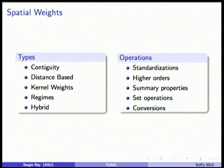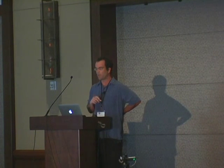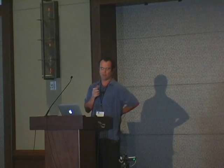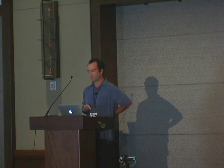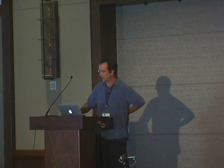For spatial weights, there are many ways to express neighbor relationships between observations: contiguity-based notions, distance-based constructs, k-nearest neighbors for point data, CG-based weights, kernel weights, and regime weights. The weights also support various operations — transformations, standardizations, higher orders, and set-theoretic operations.